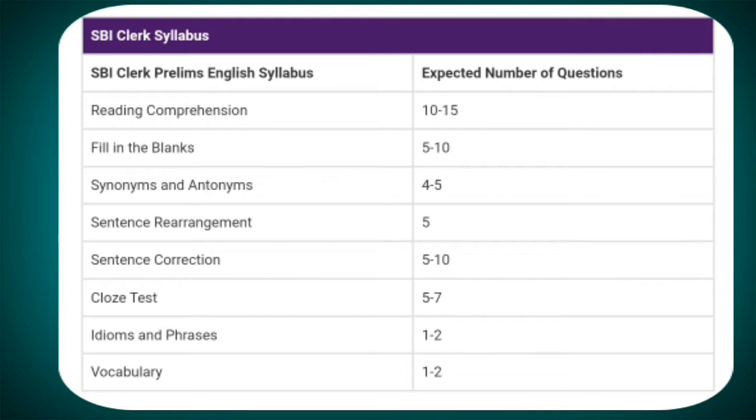SBI Clark Prelims English Syllabus Expected Number of Questions: Reading Comprehension 10-15, Fill in the Blanks 5-10, Synonyms and Antonyms 4-5.